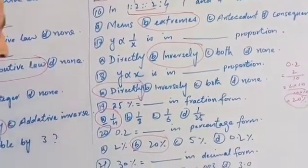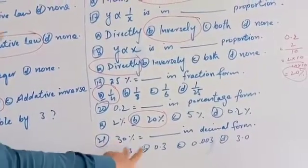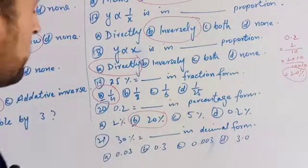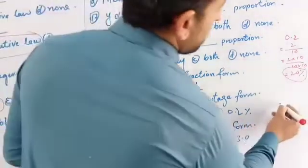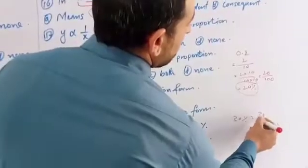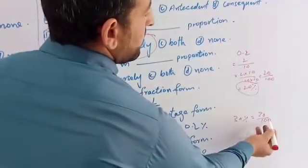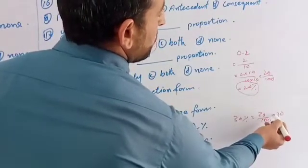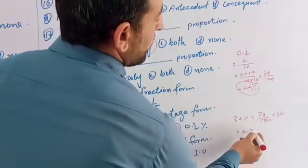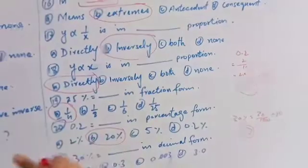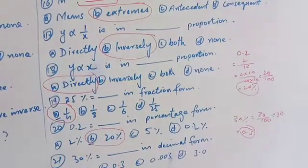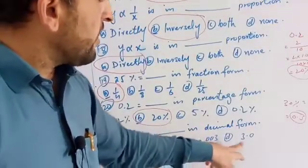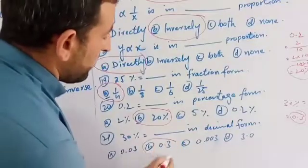Number 21: 30 percent is equal to what in decimal form? The options are shown. 30 percent divided by 100 equals 0.30, or simplified 0.3. So the answer choices are 0.03, 0.3, 0.003, and 3.0 — and 0.3 is the correct answer.